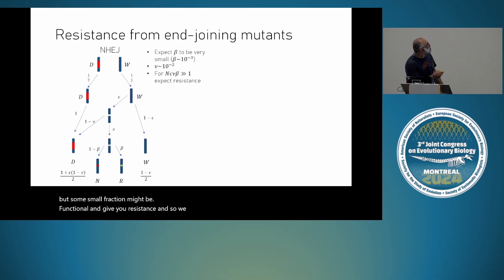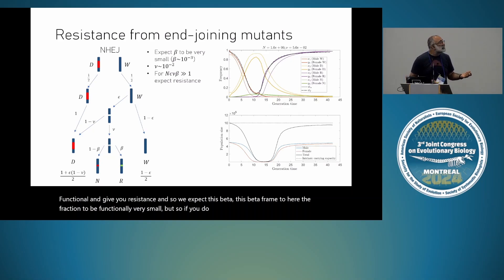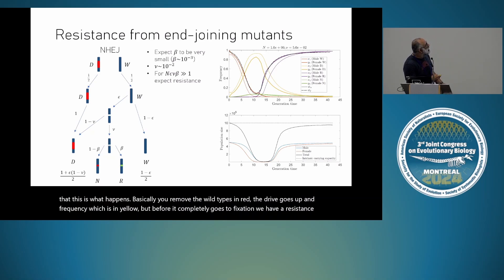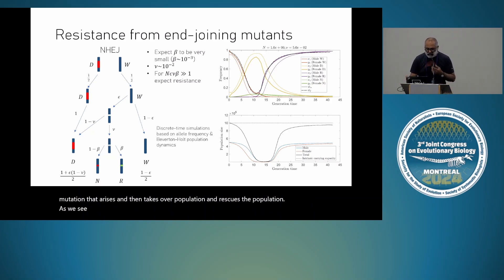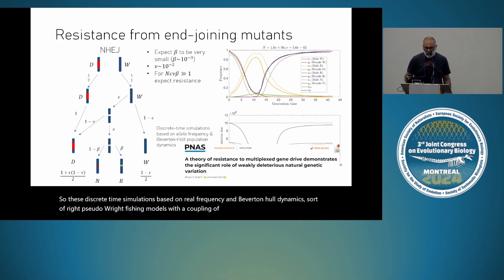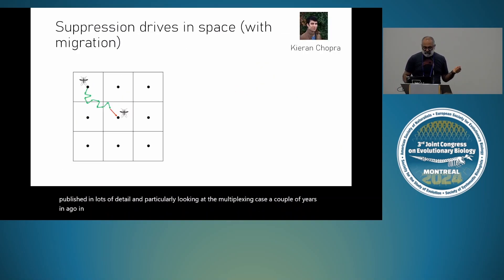We expect this beta parameter, the fraction to be functional, to be very small. But if you do simulations of such a thing, you find that this is what happens. Basically, you remove the wild type in red. The drive goes up in frequency, which is in yellow. But before it completely goes to fixation, we have a resistance mutation that arises and then takes over the population and rescues the population. These are discrete time simulations based on allele frequency and Beverton-Holt dynamics, sort of pseudo-Wright-Fisher models with a coupling of population dynamics. And this is published in lots of detail, particularly looking at the multiplexing case a couple of years ago in PNAS.